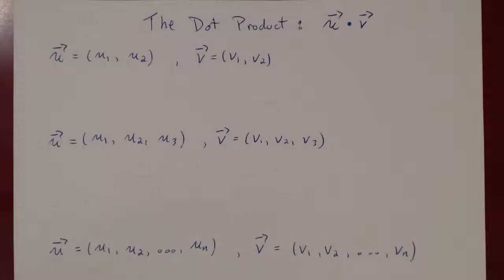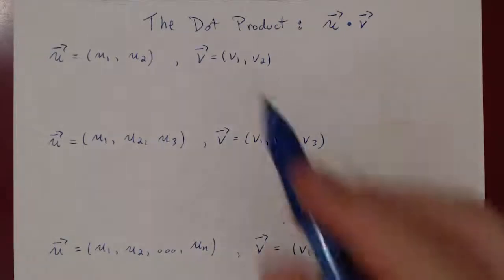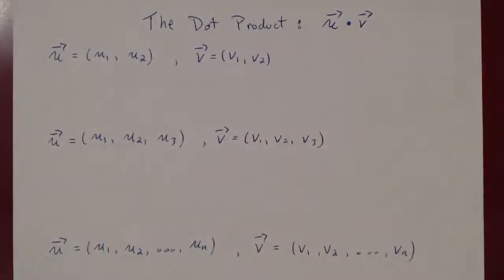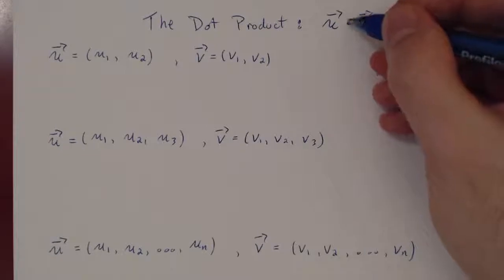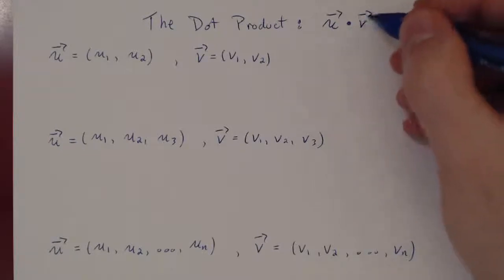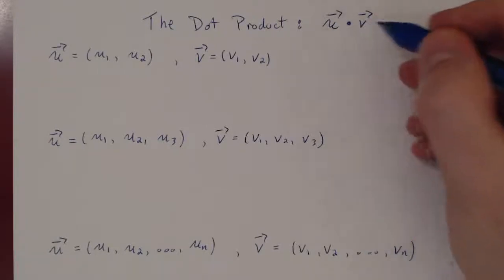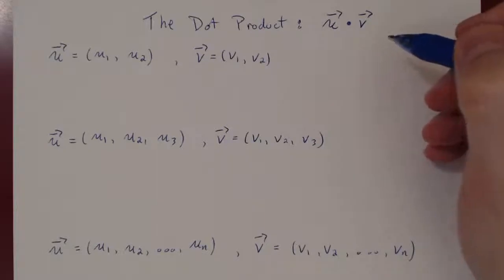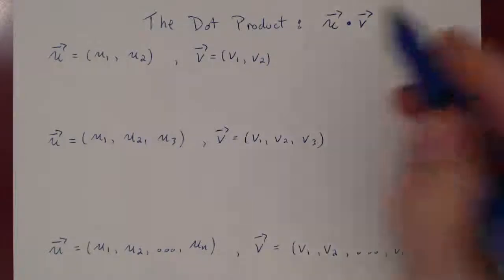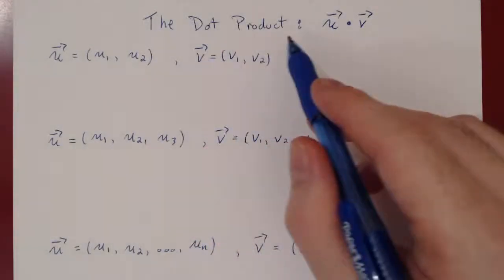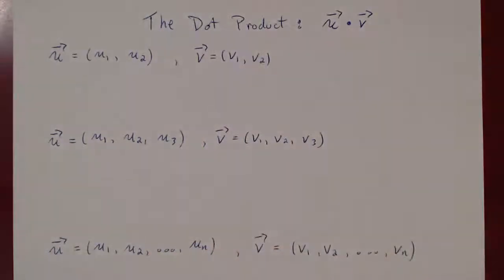In this video, we want to consider the operation called the dot product between two vectors. If I give you vectors u and v, we usually write u dot v — don't be afraid to write a big bold dot. So this reads u dot v, and this is a vector operation that takes two vectors and gives you a scalar, a real number. This is by far the most important vector operation for us, and hopefully it will look vaguely familiar.